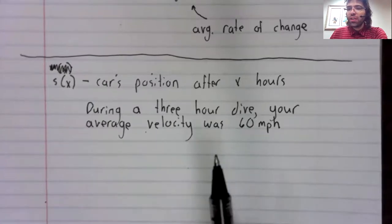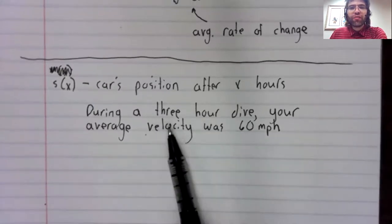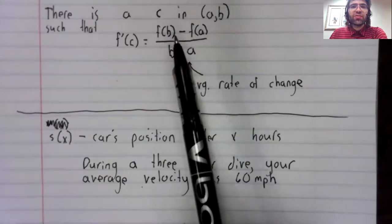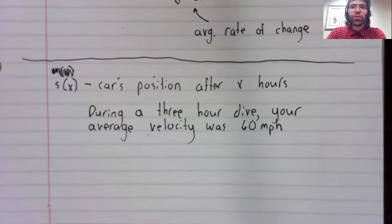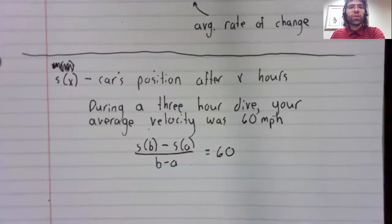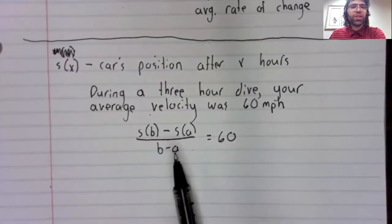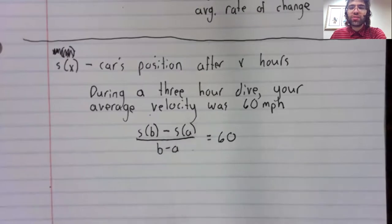In this context, average velocity is the average rate of change. So the average velocity was 60.